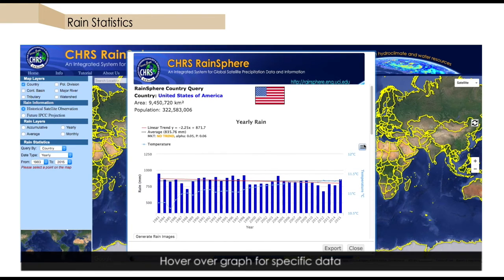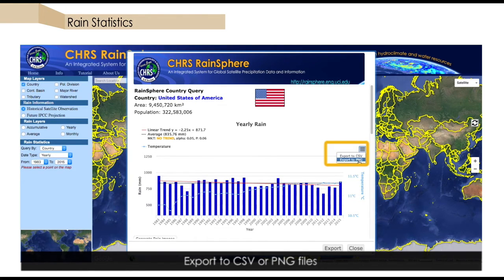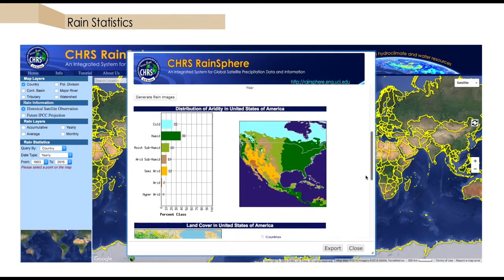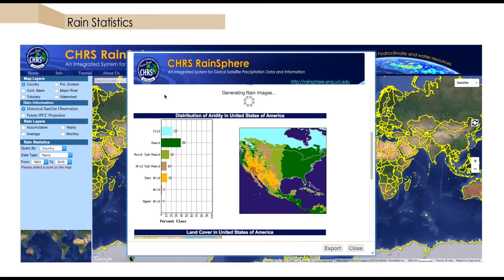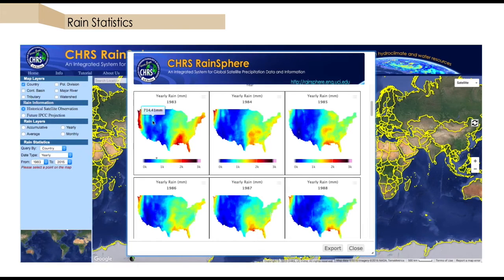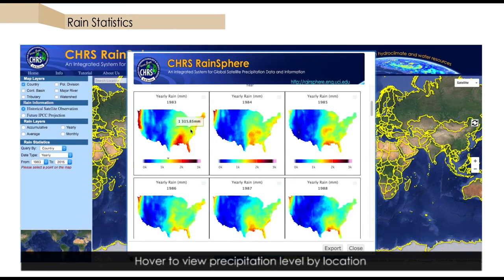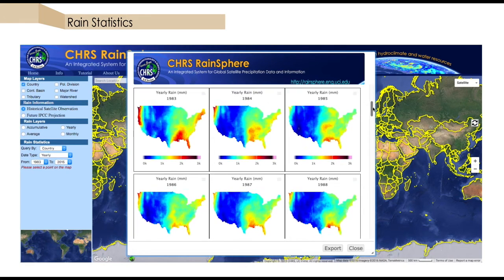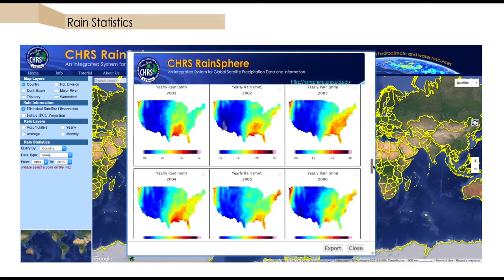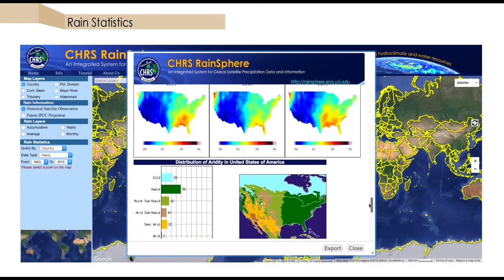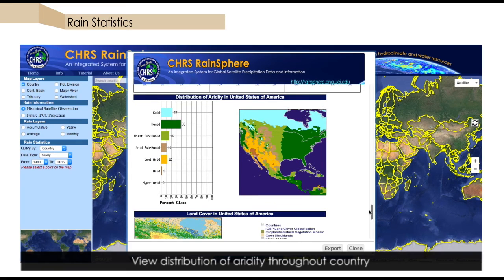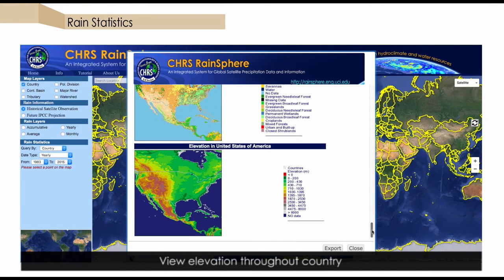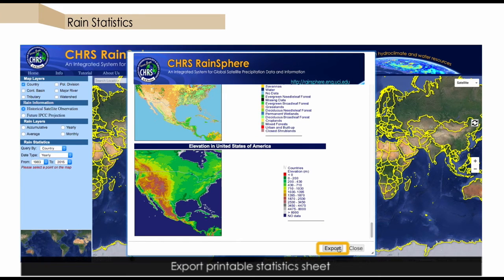We have the luxury of exporting the chart data to a CSV file or an image file. We can view the individual rain images for our area to get a sense of spatial pattern changes through time. Hovering with the mouse over the precipitation images displays the estimated precipitation amount for a pixel in that image. Additional location-specific information is provided in these reports. From these, we can see distributions of aridity, land cover, and elevation. To grab the entire report, click the export button on the bottom.